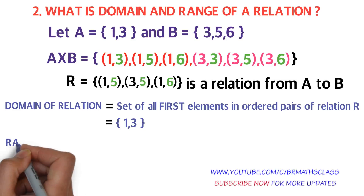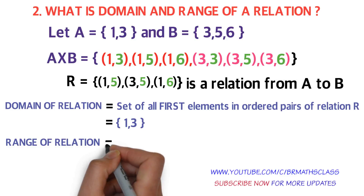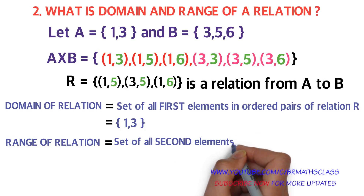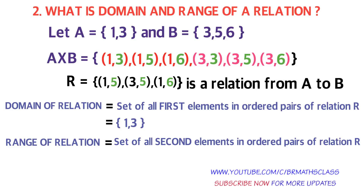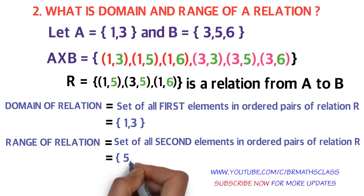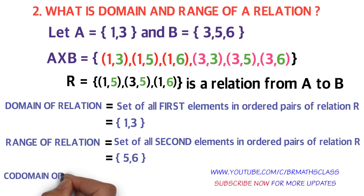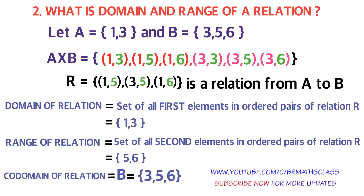Range of a relation is defined as the set of all second elements in ordered pairs. Observing relation R from A to B, the second elements are 5, 5, and 6. So the range of the relation is {5, 6}. Additionally, if R is a relation from A to B, then the set B is called the co-domain of the relation. In the above example, set B = {3, 5, 6} is the co-domain of the relation.